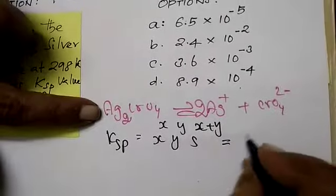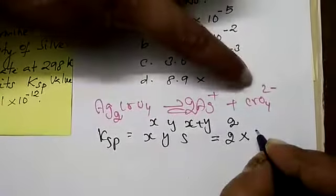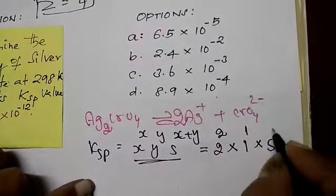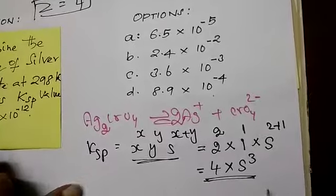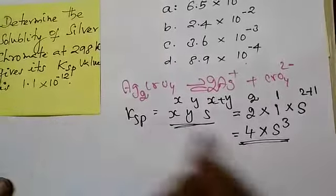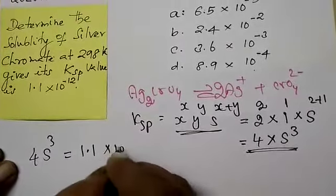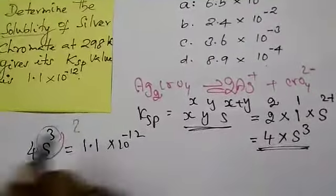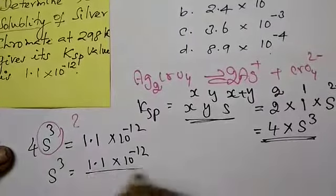The number of silver ions is 2, so 2² = 4. Chromate ion count is 1, so 1¹ = 1. Therefore Ksp = 4S³. This is the formula for this compound. Substituting the given value: 4S³ = 1.1 × 10⁻¹². They are asking us to determine the solubility S.